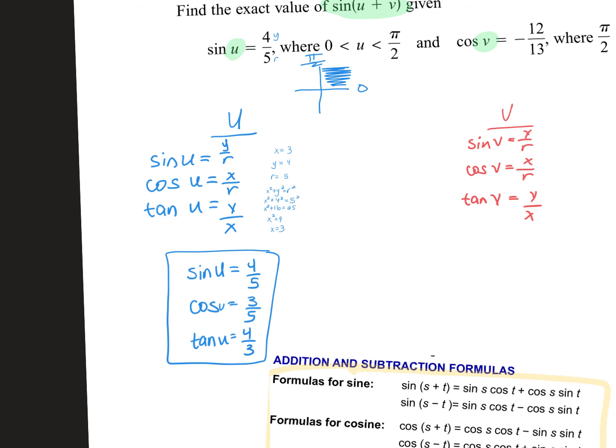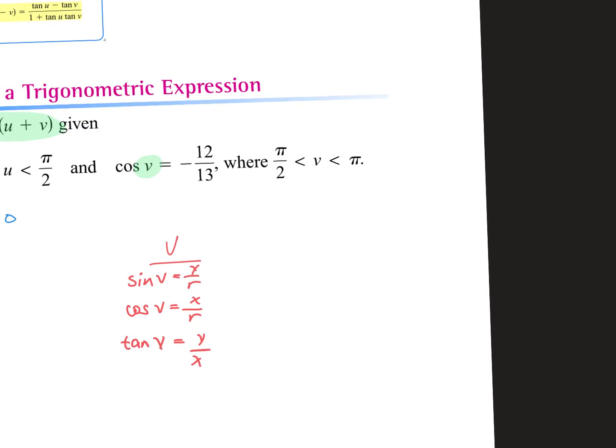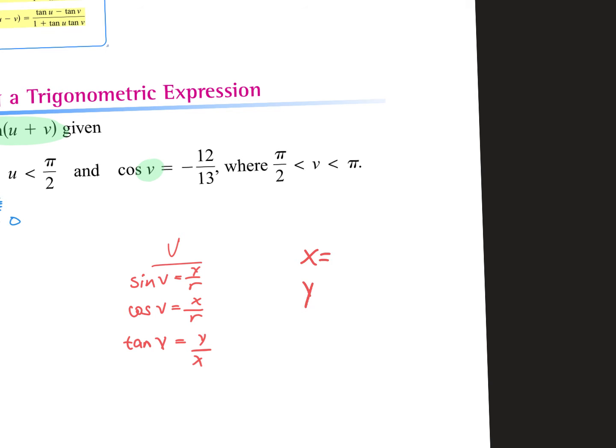So now I'm going to go over to the other triangle. They told me some information about V. I'm going to find X, Y, and R. They told me that cosine is negative 12 over 13. Cosine is X over R. So they told me the X value is 12, and the R value is 13. But one of them is negative. Which one is negative? X. Why? Because R is always positive.